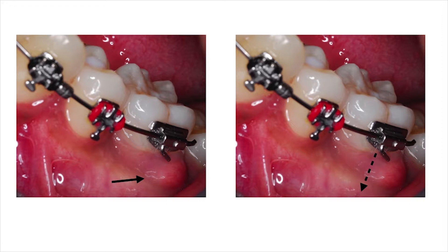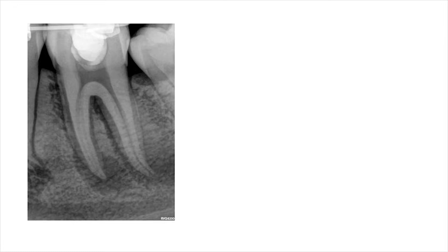The patient, a 16-year-old male, presented with a non-vital mandibular left first molar during orthodontic treatment due to a leaking occlusal restoration. The buccal gingiva was swollen and he presented with a periodontal pocket of about 11 mm in this area, as indicated by the arrows on the slide. A preoperative periapical radiograph revealed a large periapical area, and it was decided to take a CBCT scan to determine the extent of the pathology and the prognosis of this tooth.